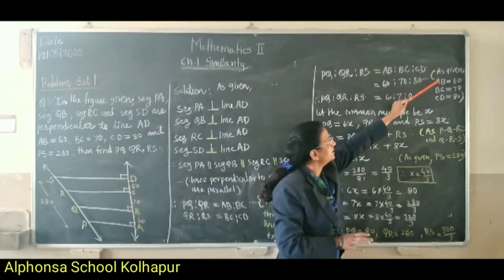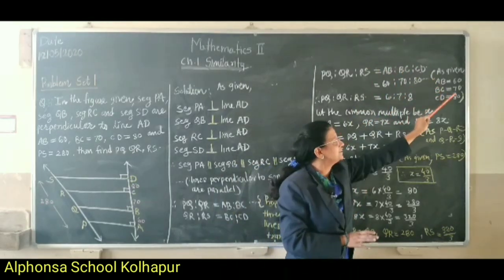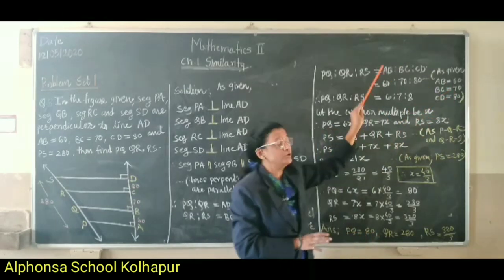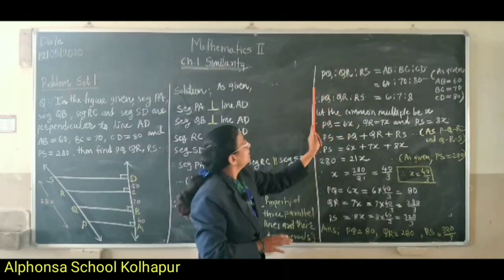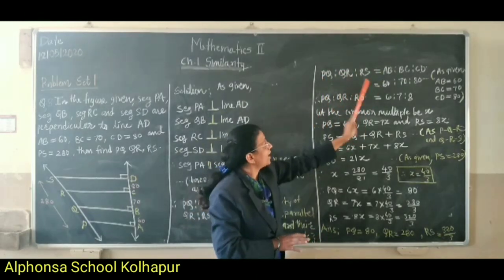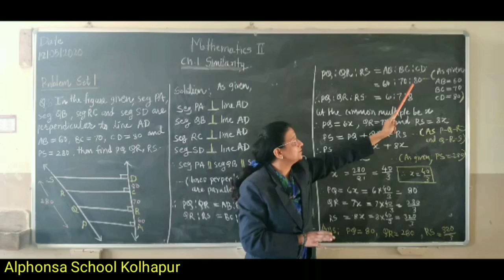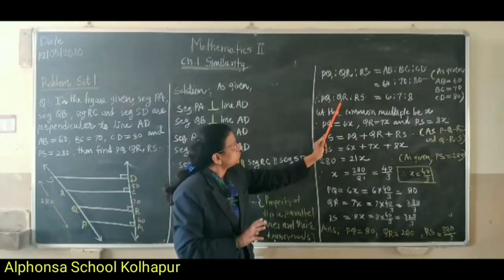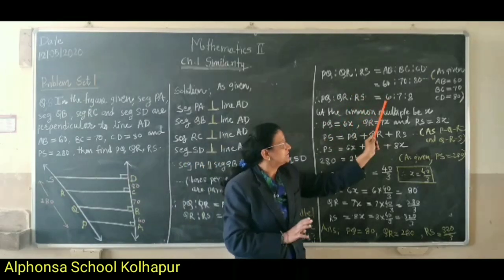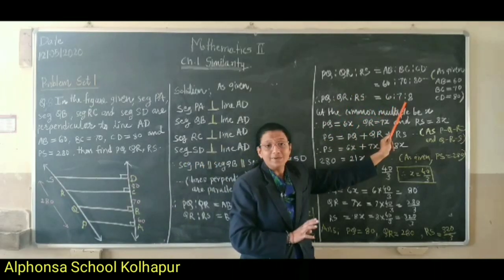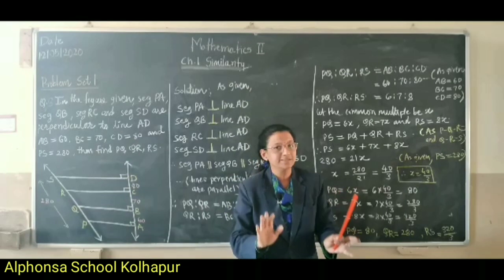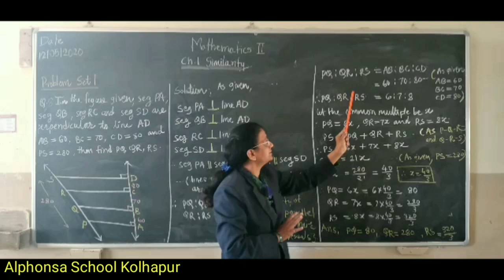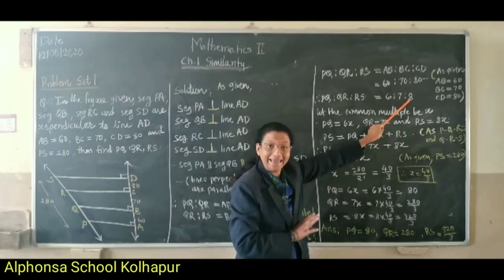The given values are AB equal to 60, BC equal to 70, and CD equal to 80. Substituting, we get PQ is to QR is to RS equal to 60 is to 70 is to 80. Dividing by the common factor 10, we get PQ is to QR is to RS equal to 6 is to 7 is to 8. Considering the common factor as x, PQ equals 6x, QR equals 7x, and RS equals 8x.